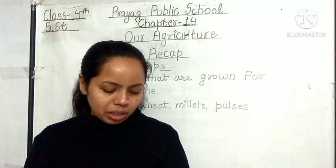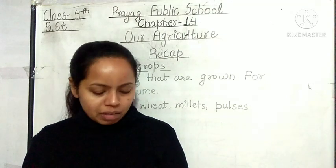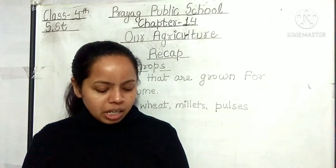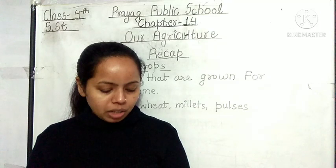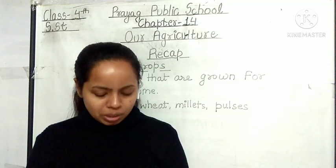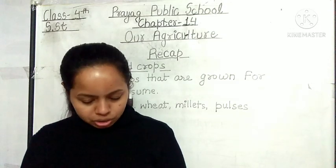Sugarcane is also grown in Bihar, Haryana, Punjab, Maharashtra, Karnataka, and Tamil Nadu — Uttar Pradesh ke alawa yahan Bihar, Haryana, Punjab, Maharashtra, Karnataka aur Tamil Nadu mein bhi ugaya jata hai.